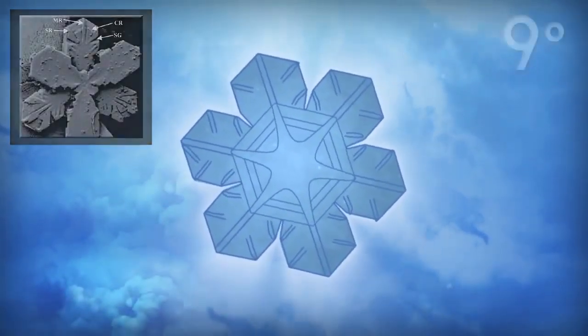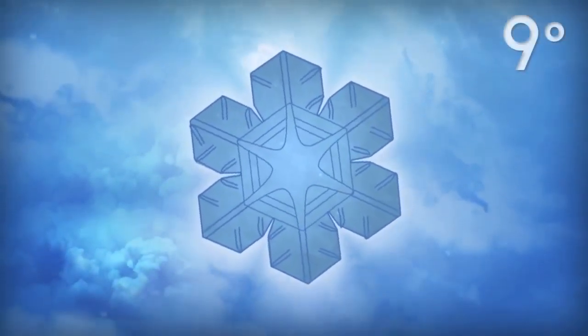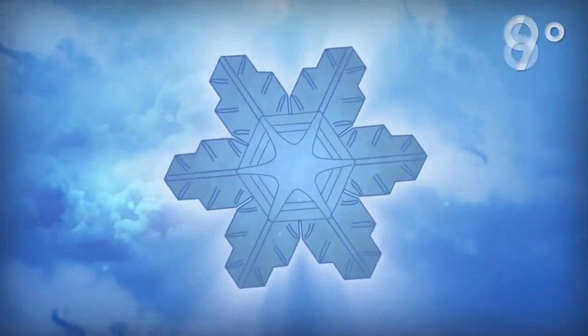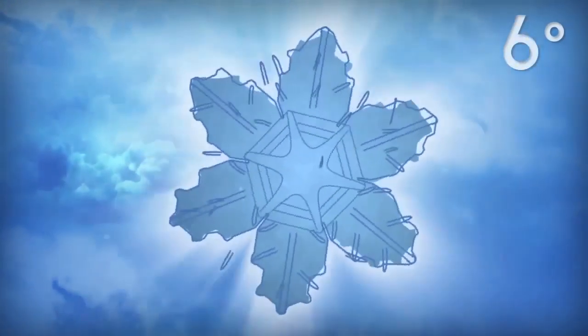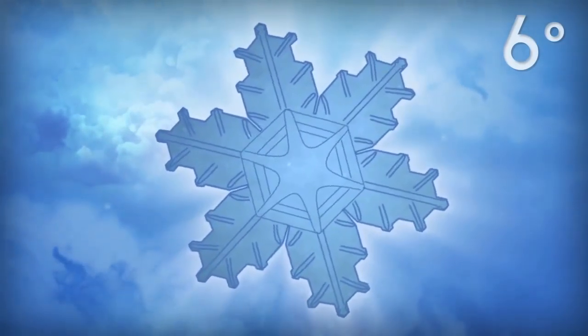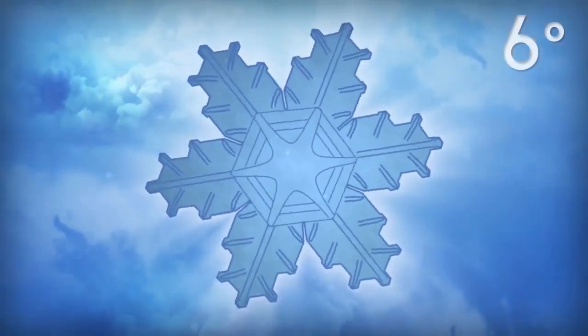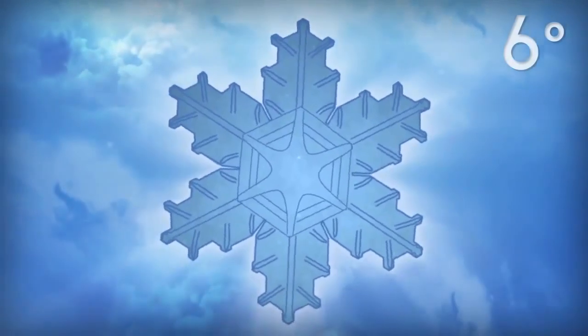When the temperature cools to nine degrees Fahrenheit new growth at the branch tips narrow. At six degrees side branches begin to sprout. Suddenly the crystal encounters a quick blast of warmer air followed by cooler air and even more side branches sprout.